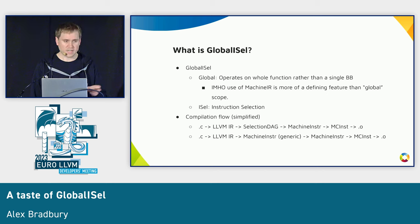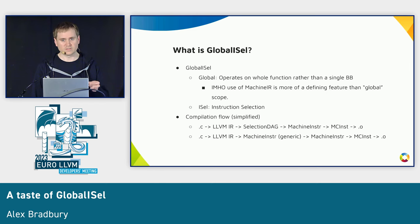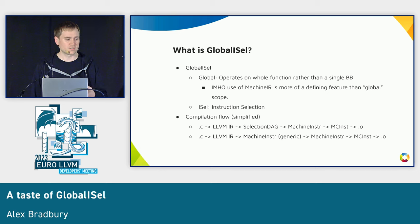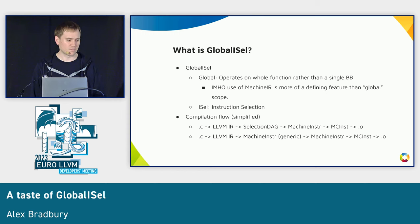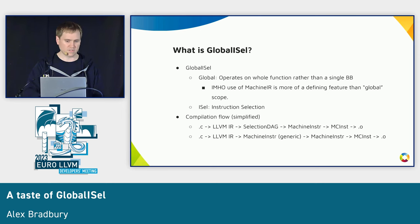Global ISel fits into that same part of the compilation pipeline. The key difference is that rather than translating to a separate IR — to Selection DAG, then to machine instructions — we translate directly to machine instructions from the start, but to a generic form of machine instructions, which can then get selected towards the target. The 'global' aspect is the most noticeable feature, but I think the use of machine IR and machine instructions is really the most notable aspect overall.